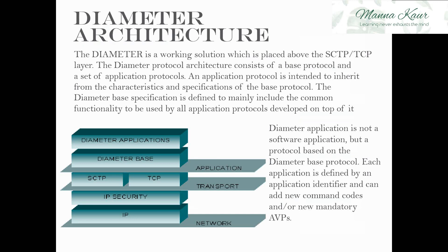The architecture of diameter is like this. It is basically placed above the SCTP and the TCP transport layer. SCTP is the preferred one because it is the Stream Control Transmission Protocol. The diameter application is not a software application but a protocol placed above the diameter base protocol, and each application has a unique ID identified by an application identifier.